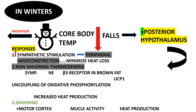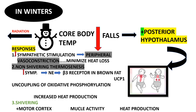Response number two is non-shivering thermogenesis, which in adults accounts for only 10–15% of heat gain. Here, increased sympathetic stimulation causes norepinephrine release onto brown fat, activating Uncoupling Protein 1 (UCP1), which uncouples oxidative phosphorylation, leading to increased heat production. Response number three is shivering — the main mechanism in adults — where motor cortex activation increases muscle activity and thereby increases heat production.